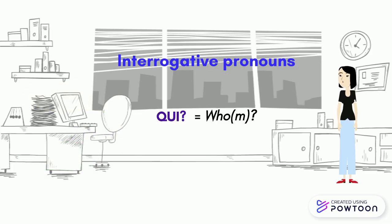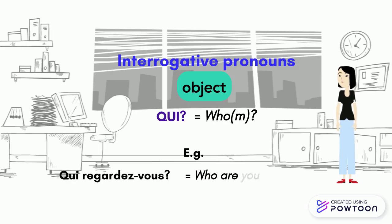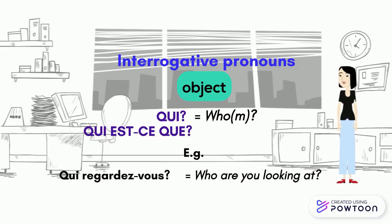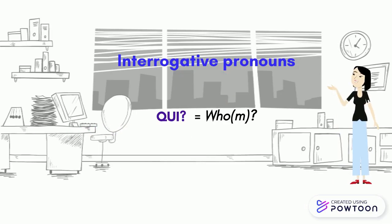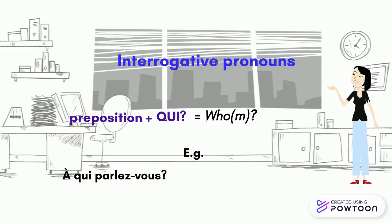Qui can also be used as a grammatical object. For instance, Qui regardez-vous? — Who are you looking at? You can also say Qui est-ce que vous regardez? Moreover, Qui can be used with a preposition. For example, À qui parlez-vous? — To whom are you talking? / Who are you talking to?